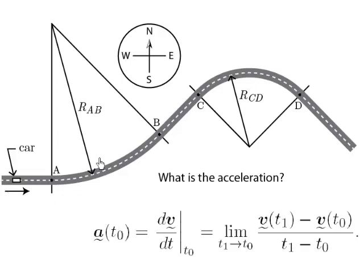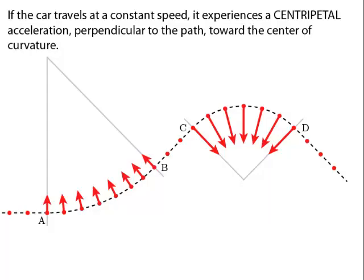Previously we discussed this problem in which we have a road, looking down from above, with a car driving along this windy path and we were asking about its acceleration. We talked about acceleration from a qualitative perspective. Now I actually want to quantify acceleration. If the car is traveling along this curvy path at a constant speed, it still has an acceleration — a centripetal acceleration that's perpendicular to the path, pointed towards the center of curvature.